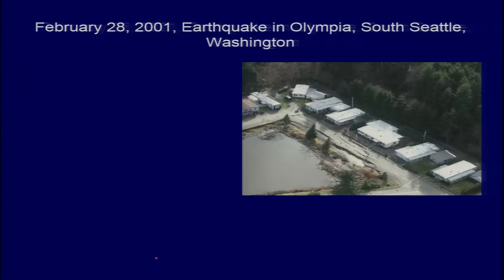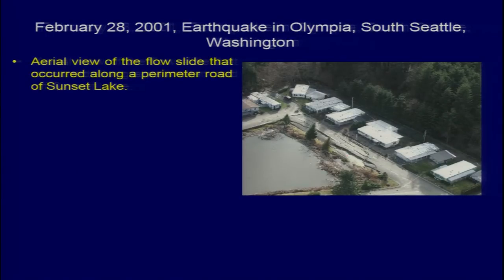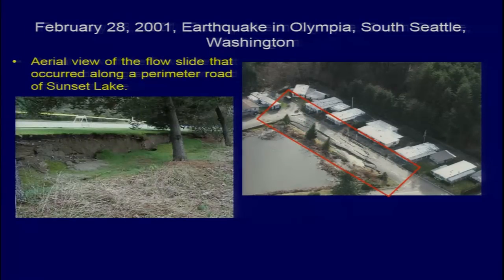An example from Seattle, Washington — I am unable to play the movie here, but we can put it later. There is an example of lateral spread triggered on 28th February 2001 because of the earthquake in Seattle, and the displacement observed was around 1.5 to 2 meters.